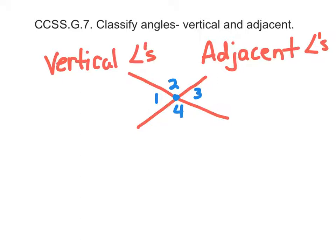A vertical angle is anytime you have intersecting lines, the opposite angles are vertical.